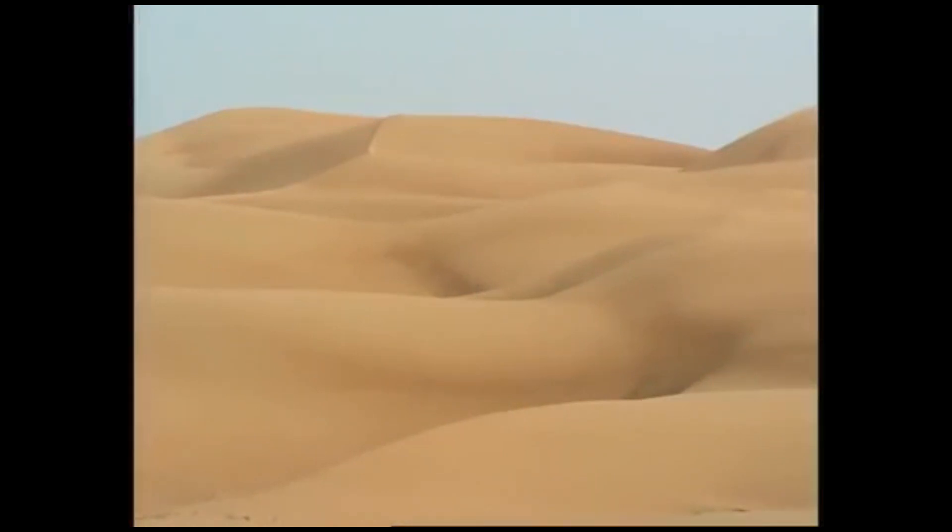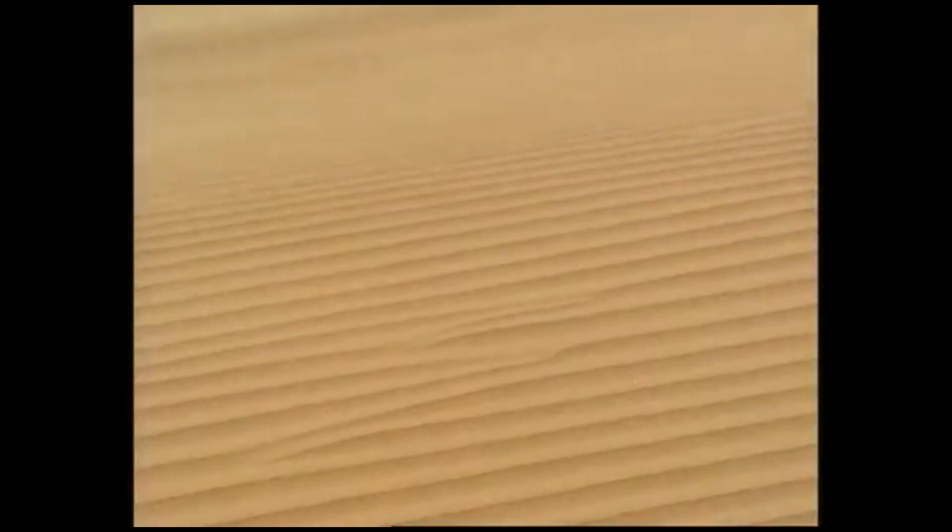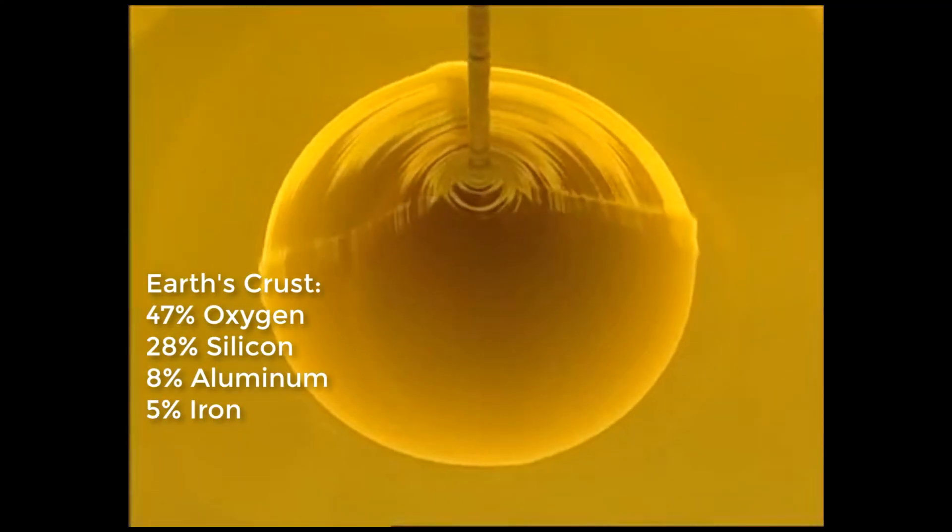This is the raw material chips are made of: sand. It is made up of silicon dioxide. Silicon is the second most common element on the Earth's crust and only exists in bonded form.